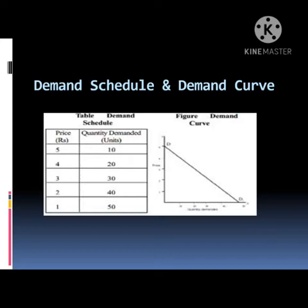The demand schedule is a list of quantities of a commodity purchased by a consumer at different prices. The table represents that when price decreases, the quantity demanded will be increased. In the diagram, the x-axis represents quantity demanded, the y-axis represents price, and dd is the demand curve.